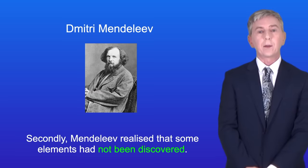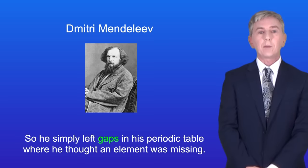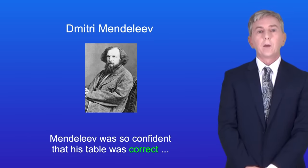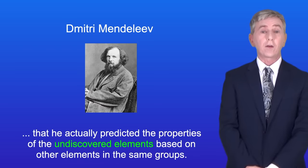Secondly, Mendeleev realized that some elements had not been discovered, so he simply left gaps in his periodic table where he thought an element was missing. Mendeleev was so confident that his table was correct that he actually predicted the properties of the undiscovered elements based on other elements in the same groups.